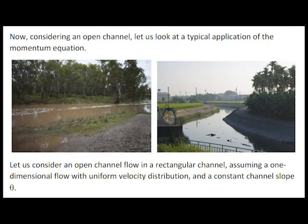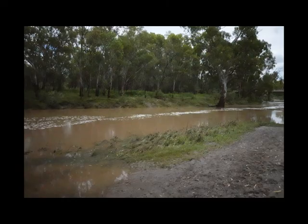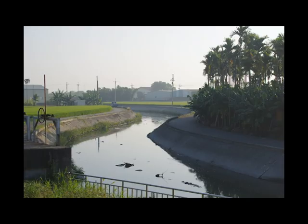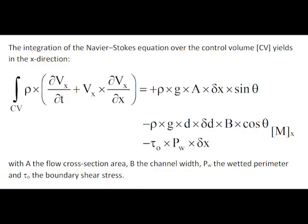Now, considering an open channel, let us look at the typical application of the momentum equation. Two examples of an open channel flow are the Kondaman River in Australia and an irrigation channel in Taiwan. Let us consider an open channel flow down a rectangular channel, assuming a one-dimensional flow with uniform velocity distribution on a constant channel slope.